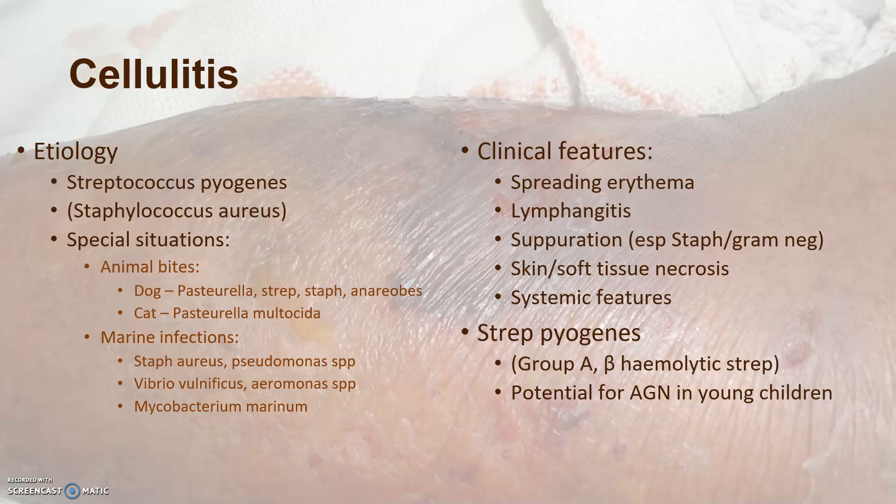The clinical features of cellulitis should be well known to you: spreading erythema and lymphangitis. Bear in mind that if Staph aureus is also involved you may have some suppuration, and if this progresses to more serious infection you may see soft tissue necrosis. Patients may also have systemic features and features of sepsis.